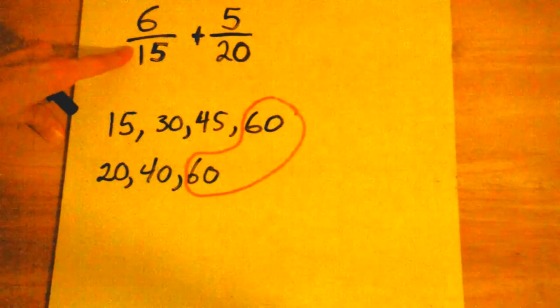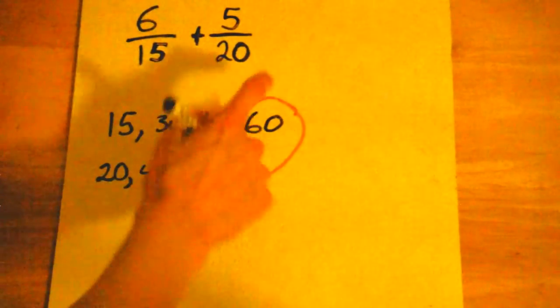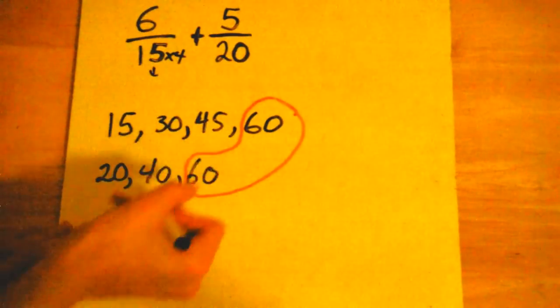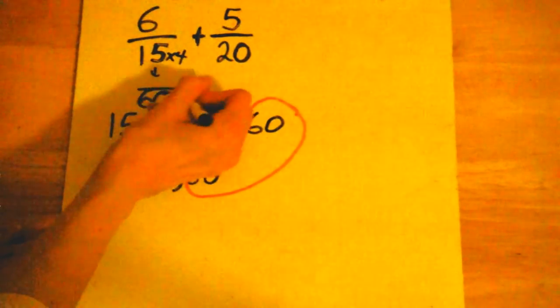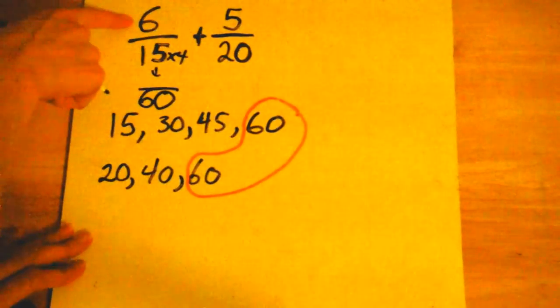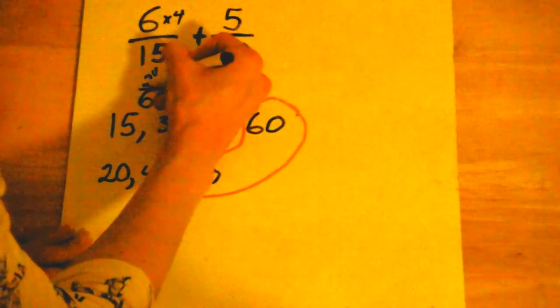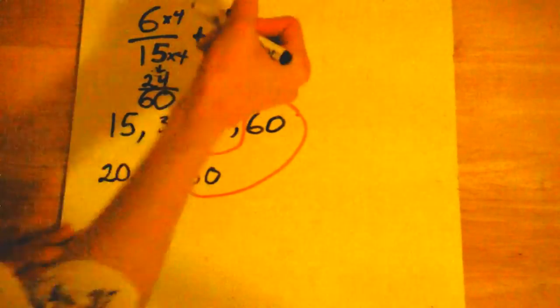What did I multiply fifteen by to get to sixty? One, two, three, four. So fifteen times four is equal to sixty. So I'm going to have to do the same thing to my numerator. So six times four is twenty-four. So now I have twenty-four sixtieths. Right?